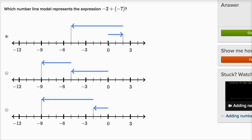Let's see what's going on with this first number line model. This is positive two right over here — it's to the right of zero — and then it subtracts seven. So this is the model for positive two plus negative seven, or positive two minus seven. But that's not what we have; we have negative two plus negative seven.